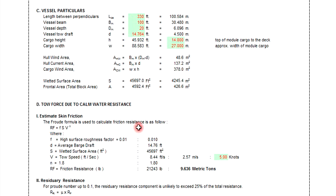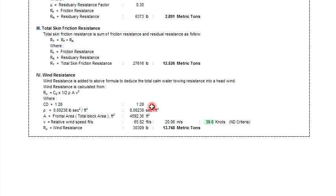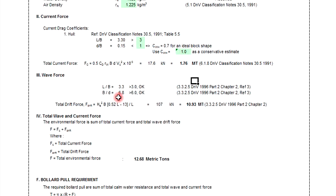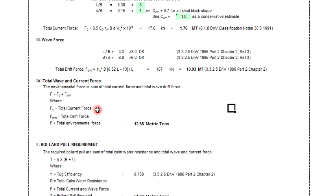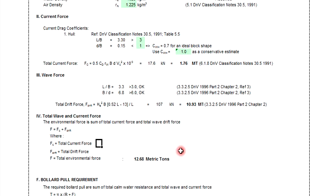The wave force is also determined based on the underwater area of the barge. This follows the DMP rules formula. The total wave force is approximately 10.93 metric tons. Adding the current force of 1.76 metric tons gives a total wave and current force of around 12.68 metric tons.